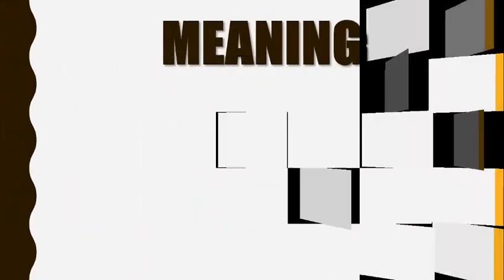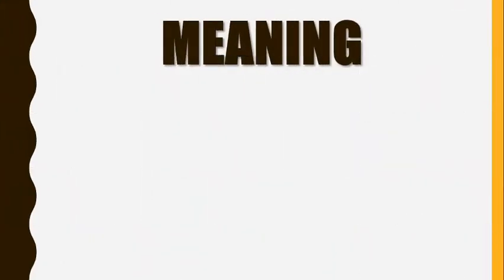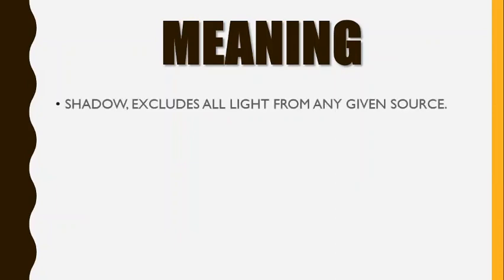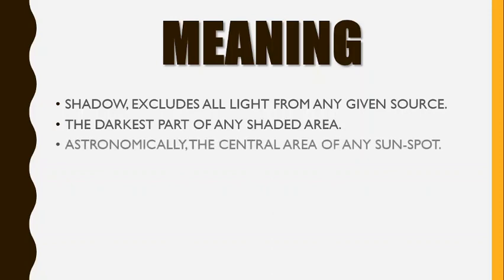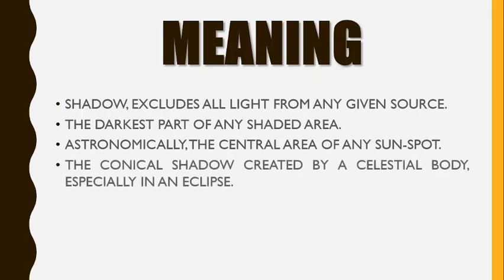Now let us talk about the meaning of this word. Umbra means shadow — a shadow that excludes all light from any given source. It also means the darkest part of any shaded area. Astronomically speaking, it is the central area of any sunspot or the conical shadow created by a celestial body, especially in an eclipse.